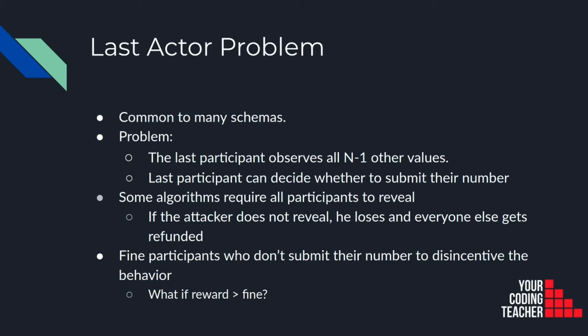The last person to reveal their number can observe all the other numbers before revealing his. This last participant also knows how the random number is generated, which means he knows if his number is going to make him win before he reveals it. So if he is a malicious actor he can decide whether he will submit the number or not. Some schemas require that all participants reveal their number, so if the attacker decides not to reveal his number he loses money and everyone else gets a refund. The workaround is to fine participants who do not submit their numbers. However, there could be cases where the reward is so much bigger than the fine that people still have the incentive to cheat. For example, in the lottery we were designing, if the attacker has 50% of the tickets he can decide to only reveal his number if it will make any of his tickets win. If he doesn't win, only one of his accounts will receive a fine, and if he wins he will make a lot of money.